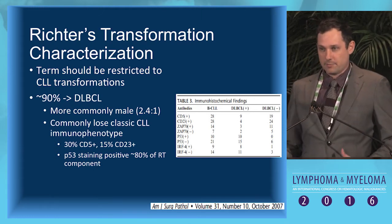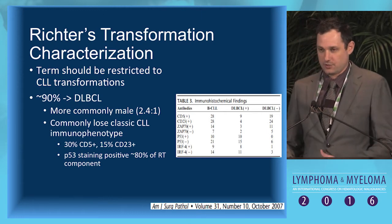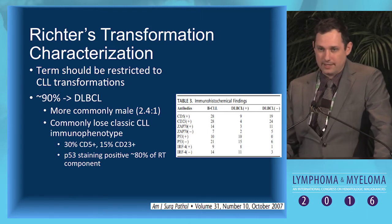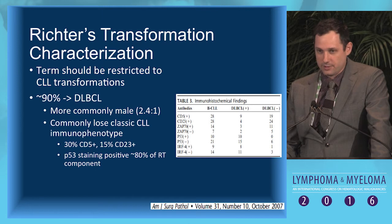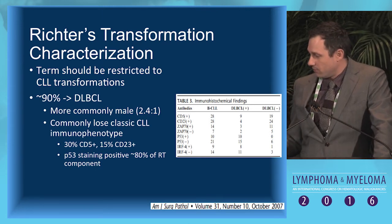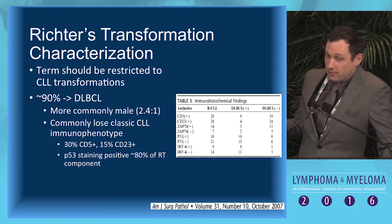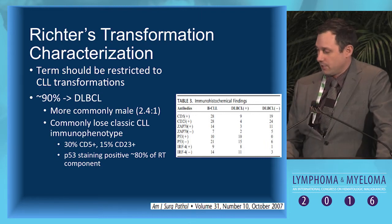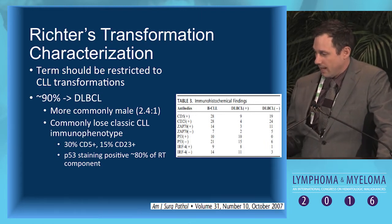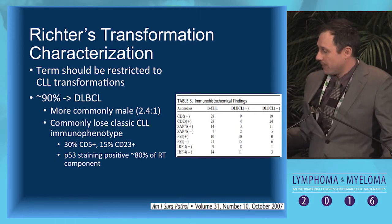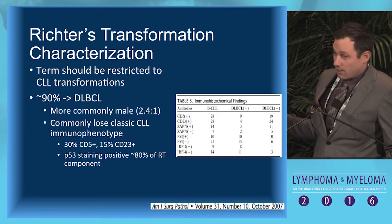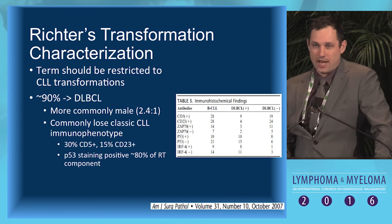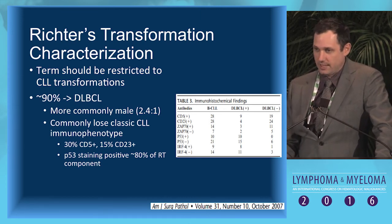When you compare the CLL compartment to the DLBCL compartment, P53 staining by IHC can be found in 80% of the Richter's transformation component. When CLL is expressing P53, 100% of the time the Richter's component also shows P53 expression — a sign of mutated and abnormal P53 processing. Even when CLL is negative for P53 at diagnosis, the vast majority of these Richter's cases acquire P53 staining.